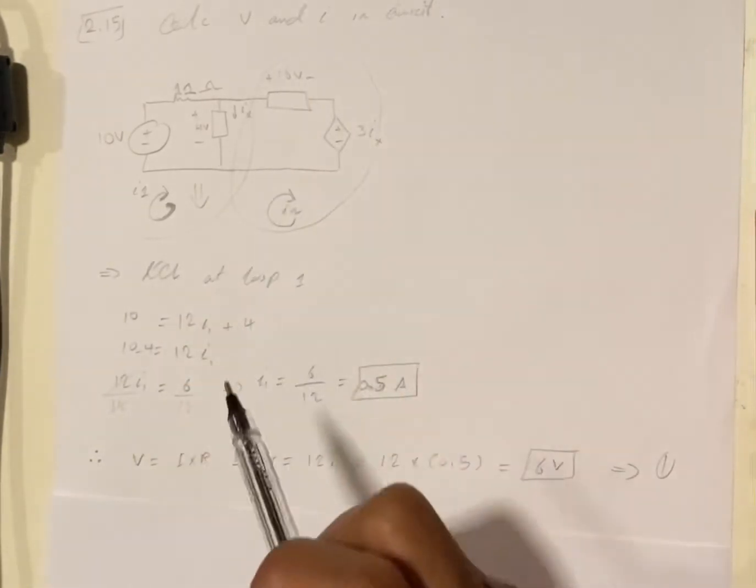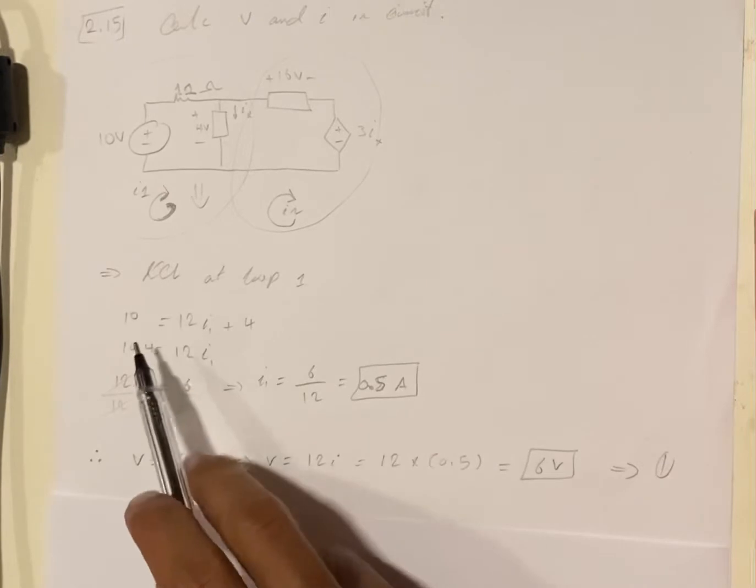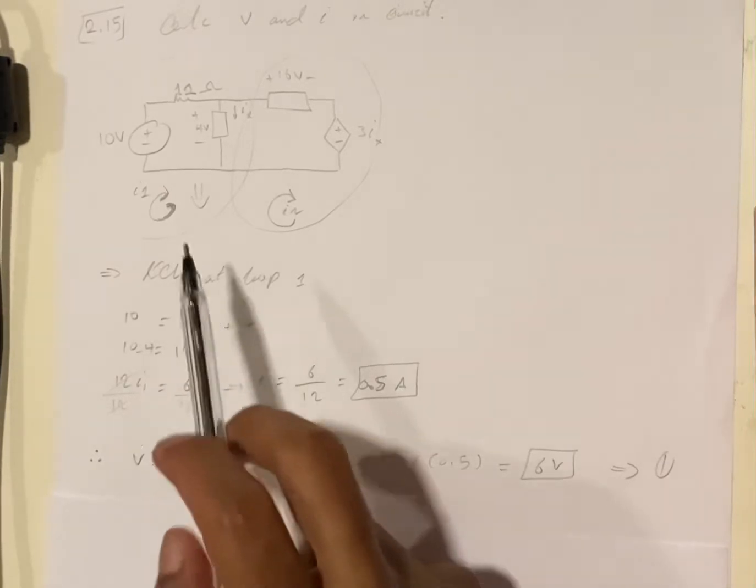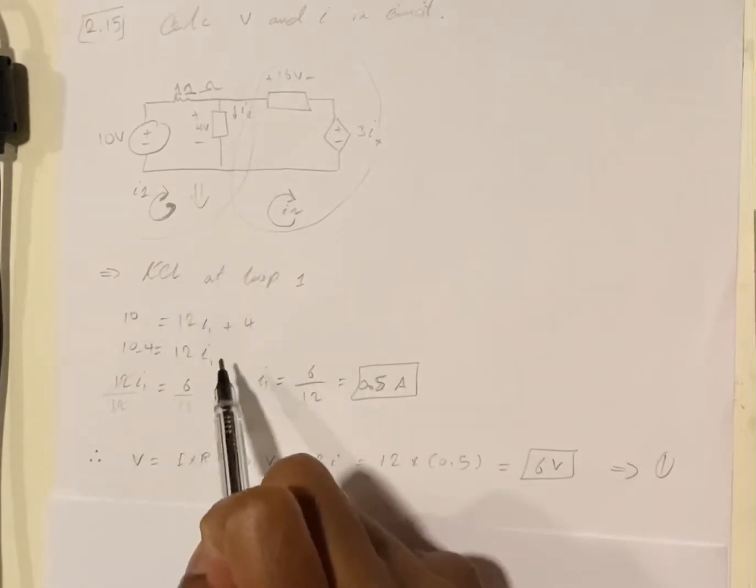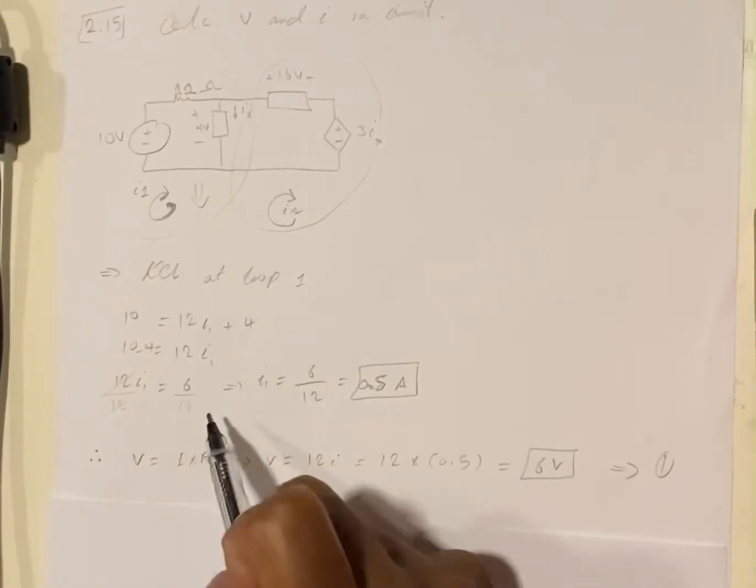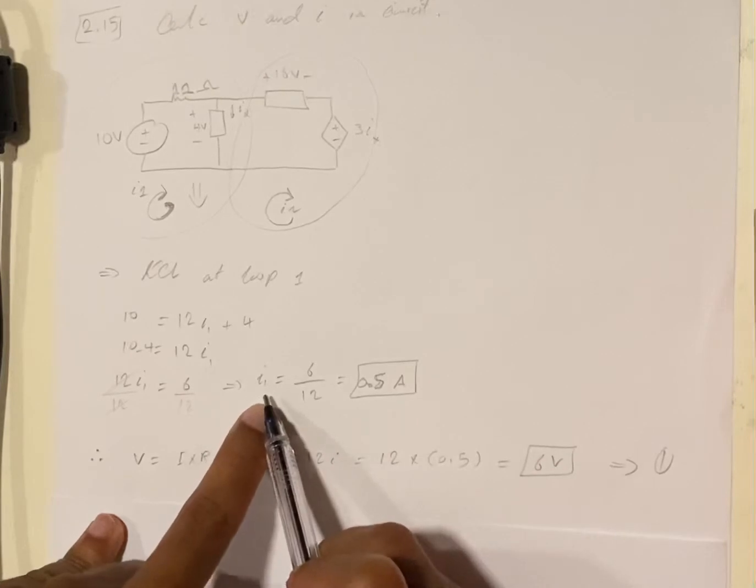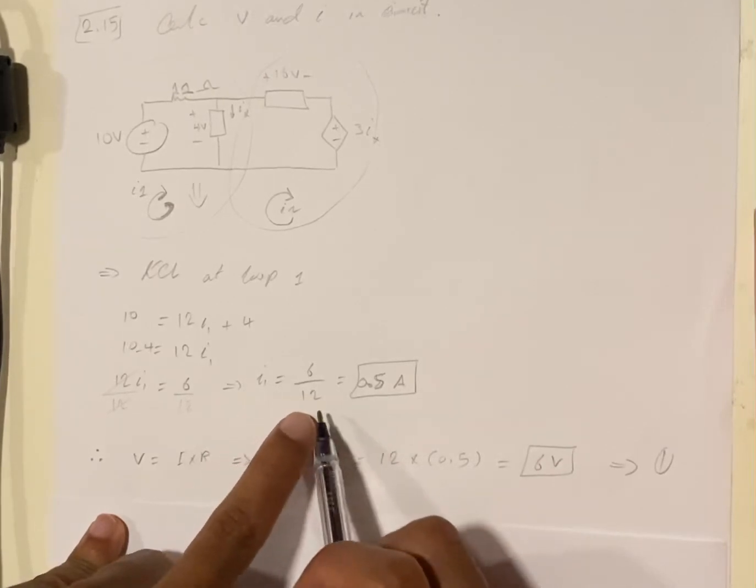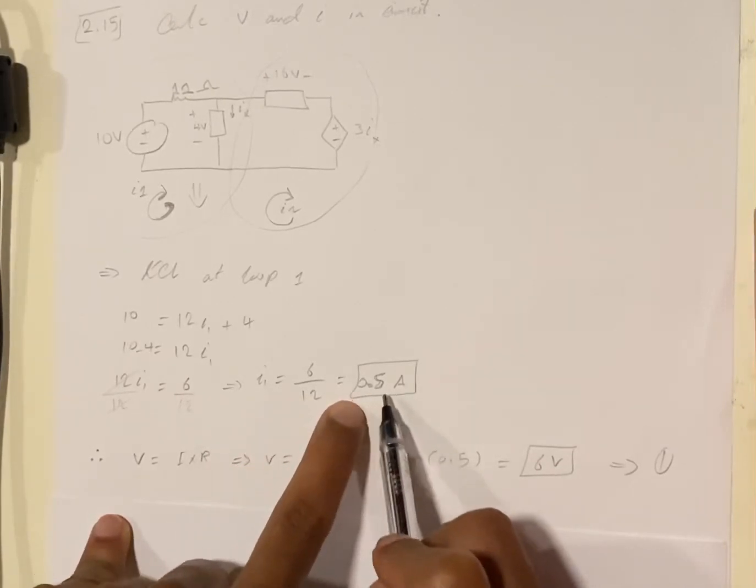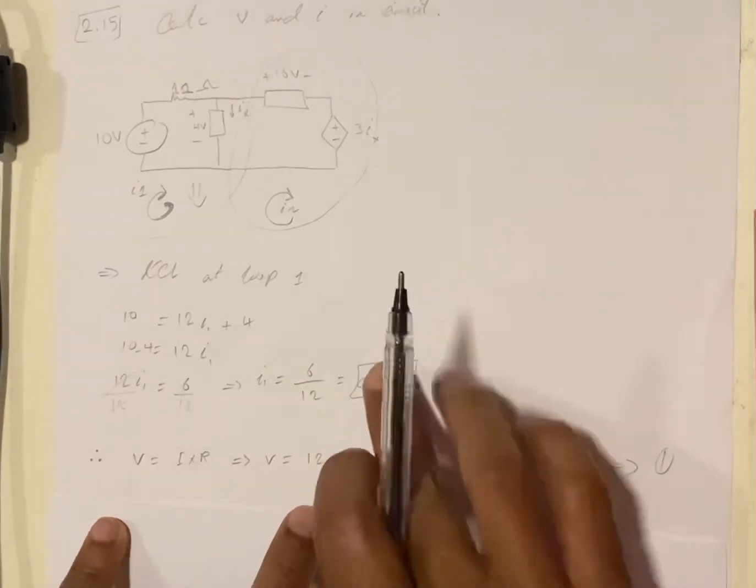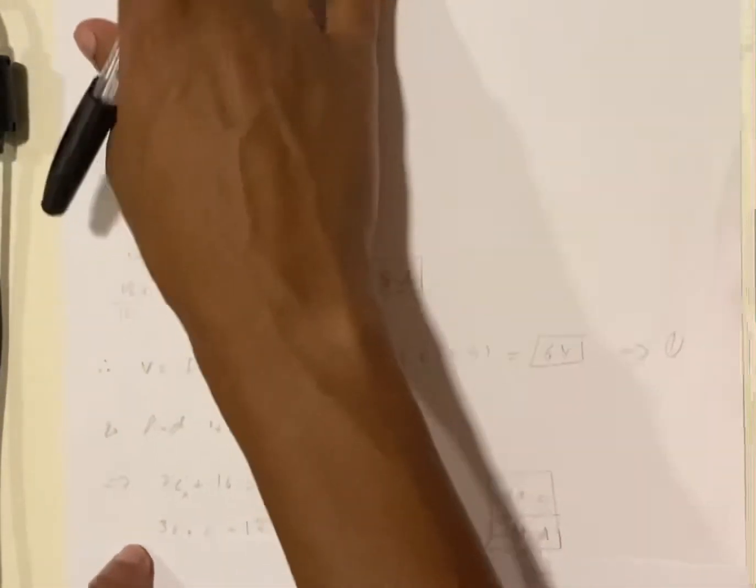I'm gonna use KCL at the node. We get 10 equals 12 I1 plus 4. After solving we're gonna get 6 over 12, and we get I1 equals 6 over 12 which is equal to 0.5 amperes.